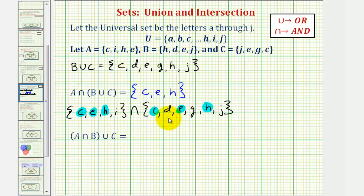Now for our second example, we have A intersect B union C. We'll first find A intersect B and then we'll take that set and find the union with C.